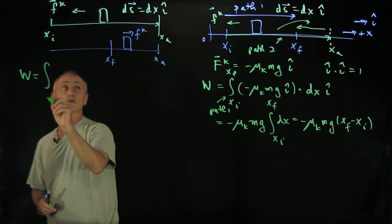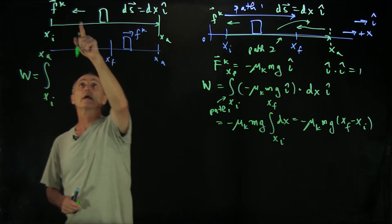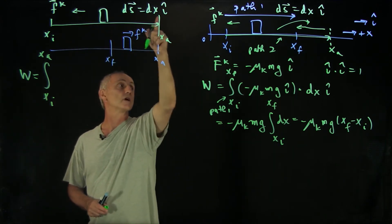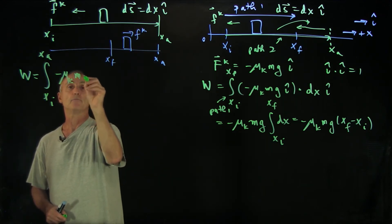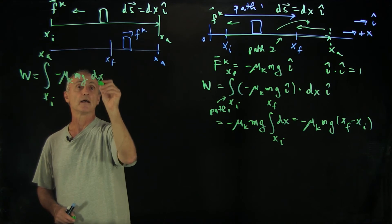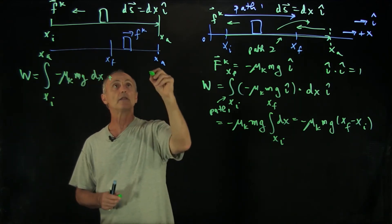So now what we have is two integrals. W is the integral from x_initial to x_a. I'm going to take the dot products here directly. It's the same friction force. We still have the same integral, which is minus μ_k mg dx. Now here's where it's a little bit tricky.